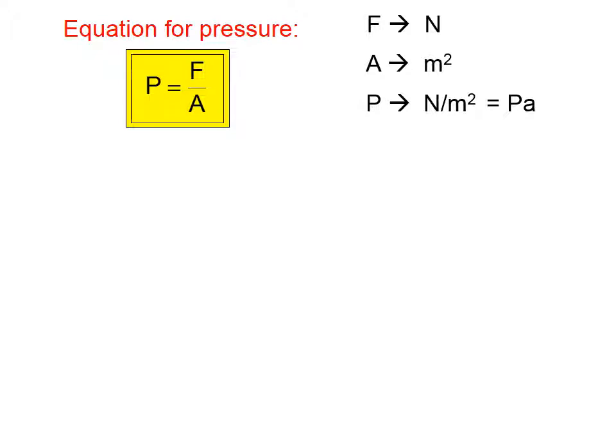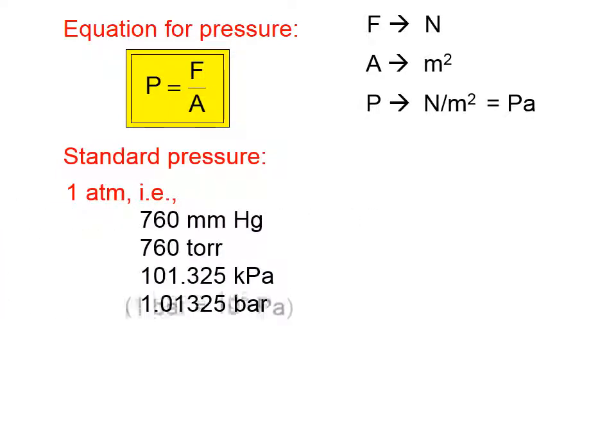So it's not a very great pressure. You should know that whenever we're talking about gases, that standard pressure is one atmosphere of pressure, which is also equal to 360 millimeters of mercury. And of course, a millimeter of mercury is also called a torr, named after Torricelli, who invented the barometer.